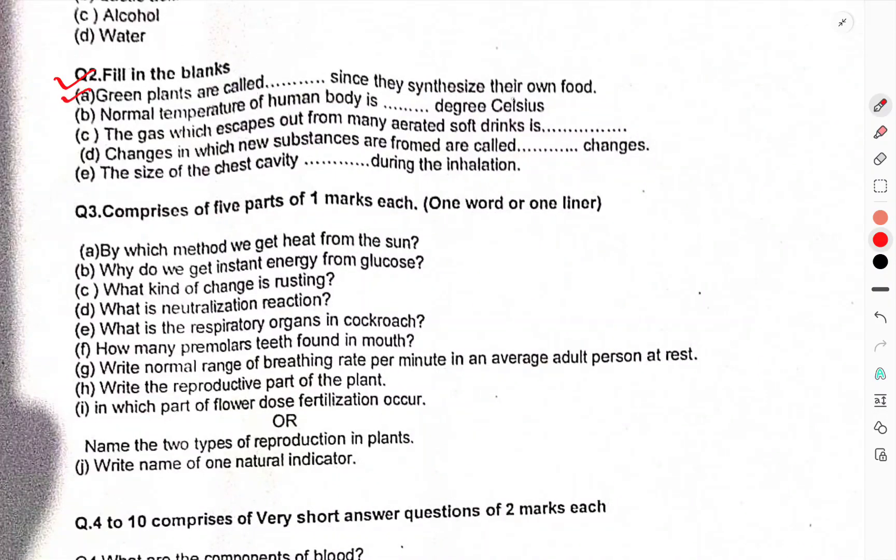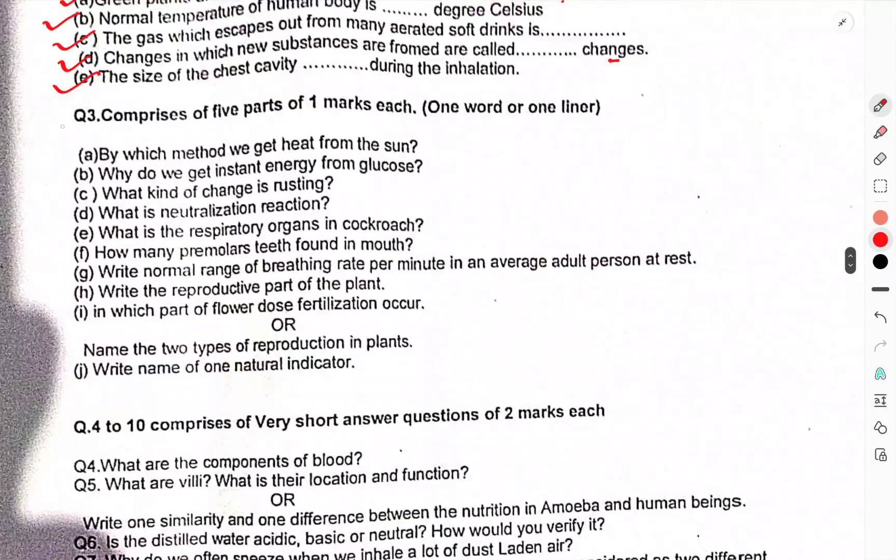Question 2: Fill in the blanks. Green plants are called blank since they synthesize their own food. Normal temperature of human body is blank degrees Celsius. The gas which escapes from aerated soft drinks is blank. Changes in which a substance changes form without changing its quality. Size of chest cavity blank during inhalation.